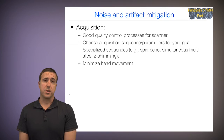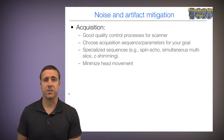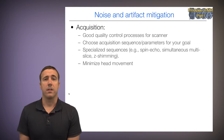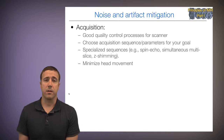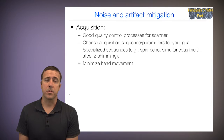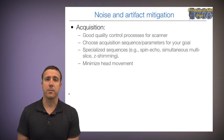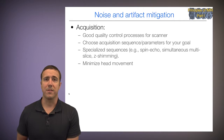The second step is to choose acquisition and sequence parameters that are appropriate for your goals in neuroimaging, and we'll talk about that more in the second course. Third, the use of specialized sequences like spin echo sequences which are less artifact prone, simultaneous multi-slice imaging that can avoid some physiological artifacts, and specialized procedures like z-shimming which can help with susceptibility artifacts in certain areas of the brain like the orbital frontal cortex and the amygdala. And always minimize head movement in the participants because head movement is a killer.